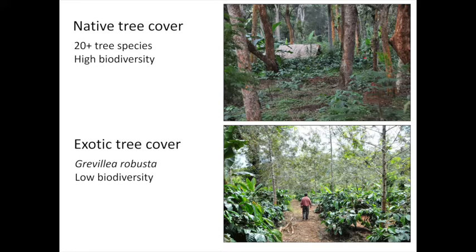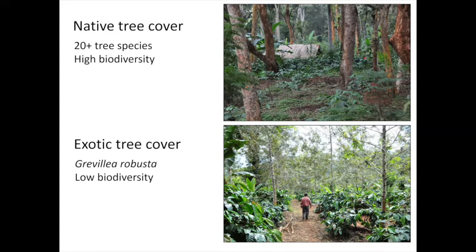There are basically two types of coffee systems. First, native tree cover — also called 'jungle coffee' — where coffee in the understory is shaded by many native trees, often remnant trees from original native forest, with 20 or more different native tree species per agroforest. Second, exotic tree cover using Grevillea robusta, introduced from Australia, where all native trees have been removed and replaced. Very low biodiversity, but still quite a productive coffee plantation.